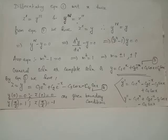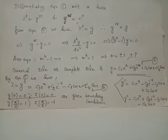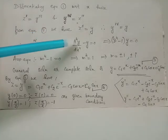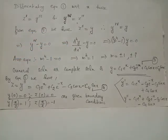From equation 2, we have z double dash equals y. Therefore, this equation can be rewritten as y raised to 4 equals y, which can also be written as d raised to 4 y upon dx raised to 4 minus y equals 0, written in operator form as D raised to 4 minus 1 operated on y equals 0.